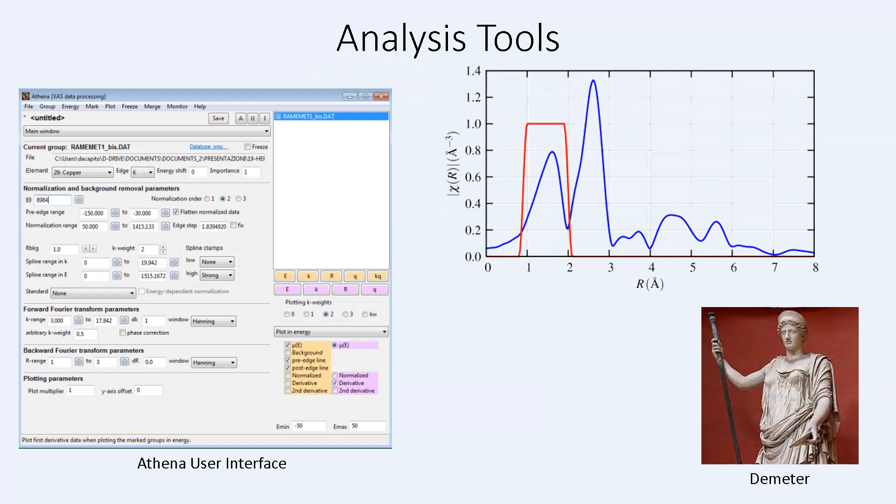The Demeter software includes Athena software for data processing and the Artemis software for producing EXAFS fits. The Artemis software also allows for simulation of EXAFS spectra and coordinate structures, often themselves optimized prior using density functional theory or other computational methods. This enables the comparison of computed models with experimentally measured spectra.